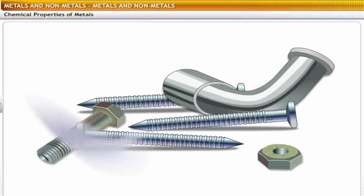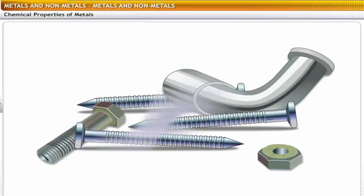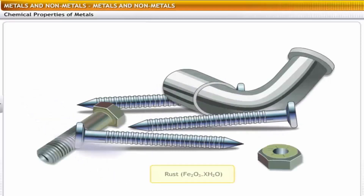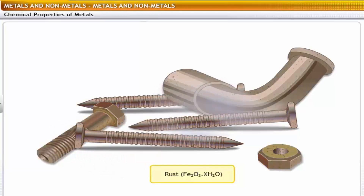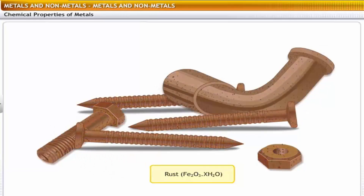Iron rusts because it reacts with moisture to form iron oxide, which is commonly known as rust. Metals react with other elements in a variety of ways; let's look at some such reactions.